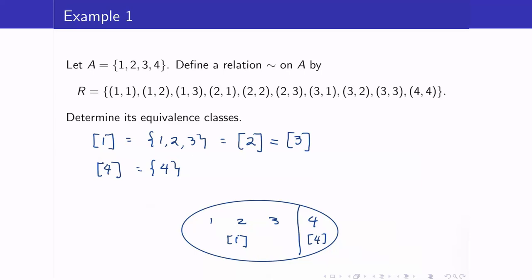Let us have a few examples. In our previous video lecture, we already encountered this equivalence relation and were able to find the set of equivalence classes. So the two distinct equivalence classes are this one. In order to form the transversal, our T here is the set containing 1 and 4. However, we can also write — let's call this T1 — we can also have the transversal {2, 4}.